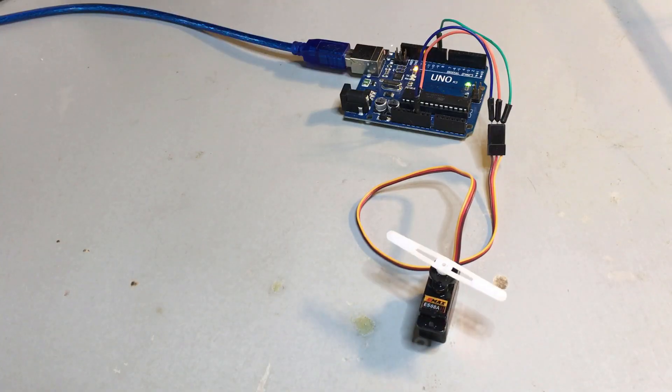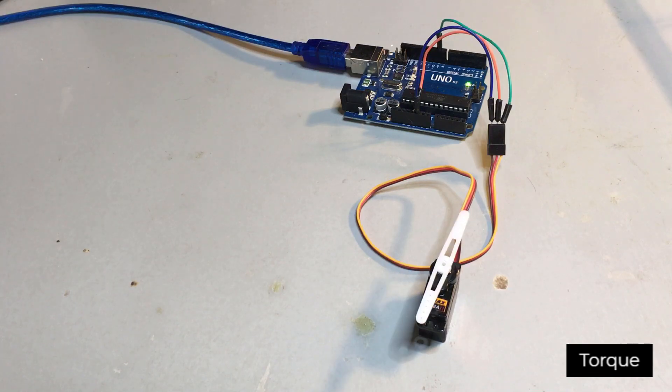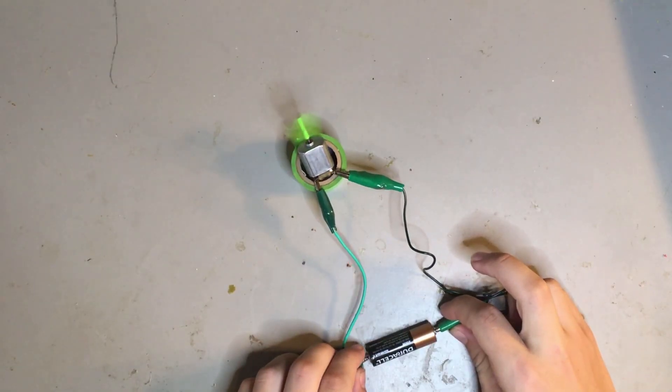We can improve both the strength, also called torque, and the speed of a DC motor. To do this, we use gears.